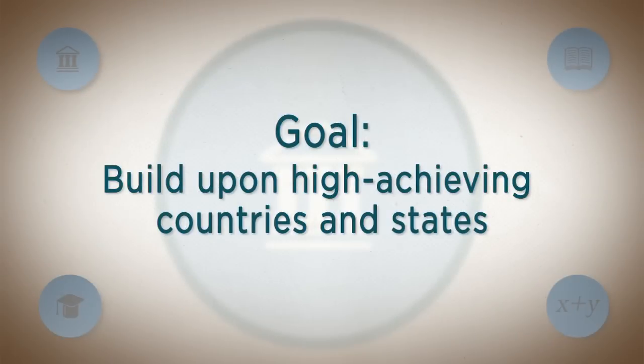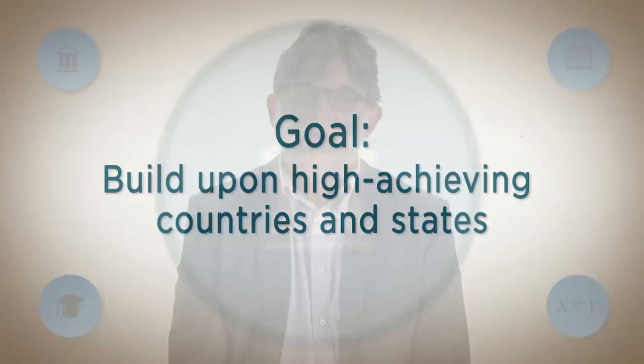When we started writing the standards, we looked at a lot of sources and listened to a lot of people, but one of the important sources of information was to look at the standards of other high-achieving countries as measured by international comparison — the high-achieving East Asian countries: Hong Kong, Korea, Singapore, Japan. It was important to us to figure out what they were doing. You could do worse than emulate success. It was pretty clear from looking at those standards that there was a focus in elementary school on building a really solid foundation in number and operations.